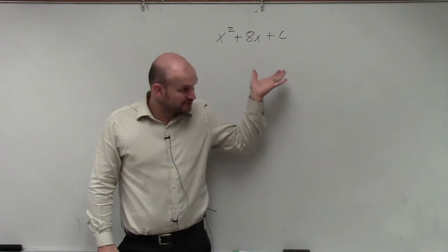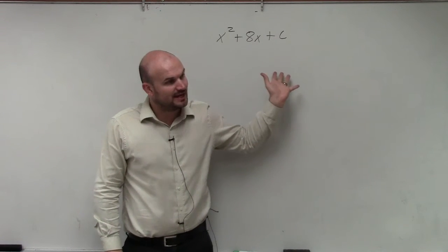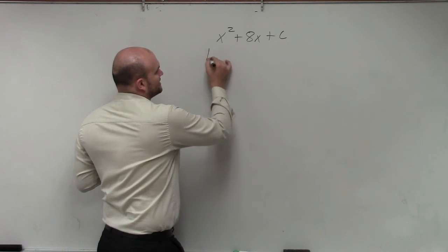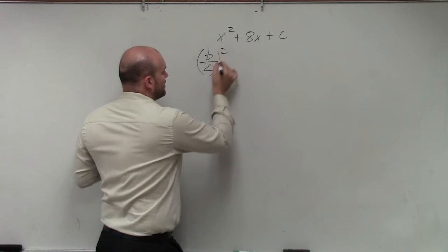You might not remember what a perfect square trinomial is, so that's okay. What you're going to do is take b divided by 2 and square it.